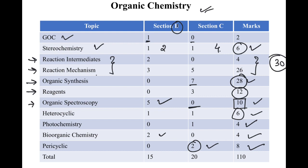Total: 110 marks were asked for organic chemistry in the CSIR NET paper. The most important topics are organic reaction mechanism and intermediates, organic synthesis, reagents, spectroscopy, and pericyclic chemistry. Stereochemistry and GOC form the basics.